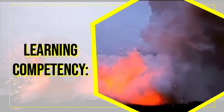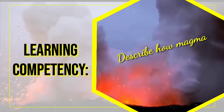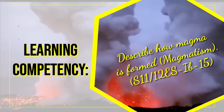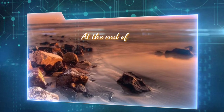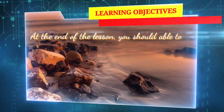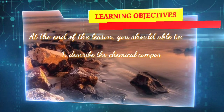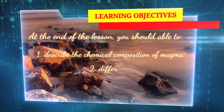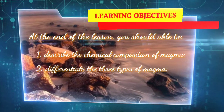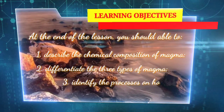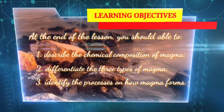Our discussion will focus on the learning competency: describe how magma is formed. At the end of the lesson, you should be able to: 1. Describe the chemical composition of magma, 2. Differentiate the three types of magma, and 3. Identify the processes on how magma forms.